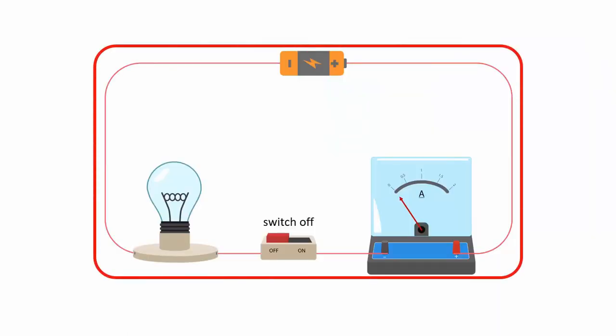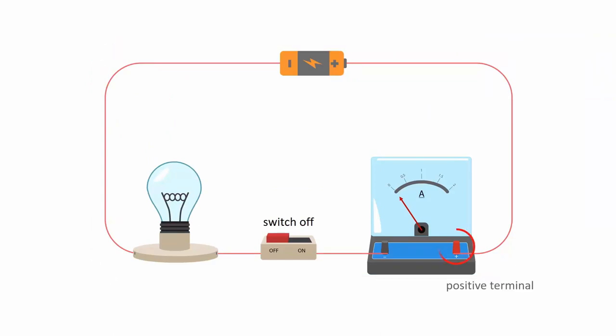An ammeter is connected in series in a circuit. Its positive terminal, colored as red, is connected to the positive terminal of the source, which is a cell here. The negative terminal, colored as black, is connected to the negative terminal of the cell.